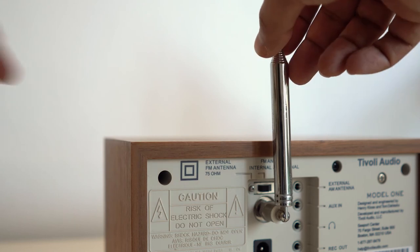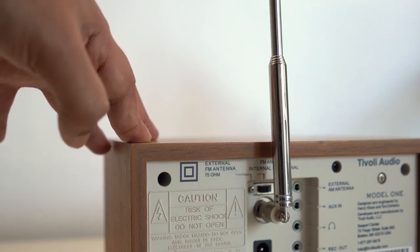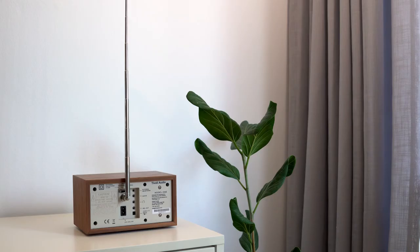If signal detection proves problematic, the Tivoli Model 1 has a multi-positional aerial extendable to 2 meters.